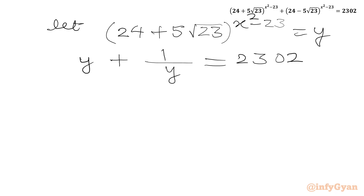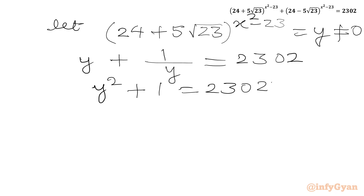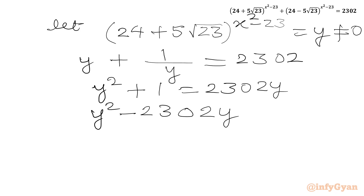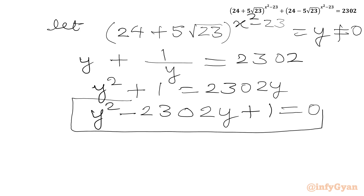So our equation becomes y + 1/y = 2302. We multiply both sides by y — since y cannot be 0, y is always positive — giving y² + 1 = 2302y, or y² − 2302y + 1 = 0. This is a quadratic equation and we are going to use the quadratic formula.